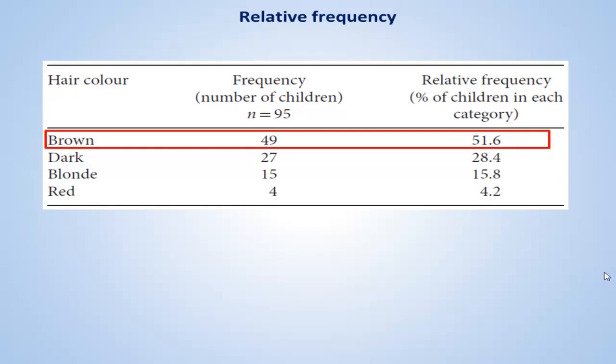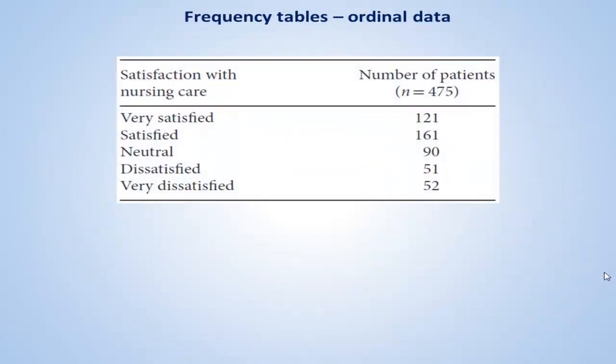When the data in question are ordinal, as an example, 475 psychiatric patients were questioned about their level of satisfaction with their psychiatric nursing care. Level of satisfaction is clearly an ordinal variable. Satisfaction cannot be properly measured and has no units, but the categories can be meaningfully ordered as they have been ordered here. The resulting data is shown in this table.